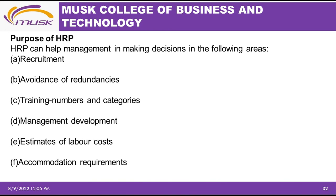Human resource planning can also help us identify training numbers and categories — the numbers required for training, including the budget for training. Another purpose is management development: HR planning helps us develop staff, especially managerial staff — when to expose them for training, at what point of the year, and how this will benefit the organization. HR planning also helps to estimate labor costs — the cost of employees in terms of salaries. Through planning, we can foresee that in the next year we will need 20 new staff, calculate how much we will be paying them, and make budget preparations in advance.